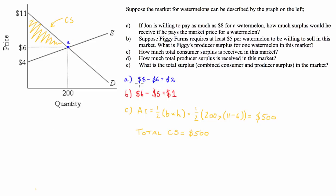Part D asks how much total producer surplus is received in this market. The total producer surplus, similar to consumer surplus, is the area above the supply line but below the market price. So the total producer surplus is this triangle here. What we need to do is find the area of this triangle.